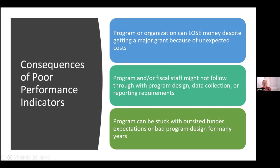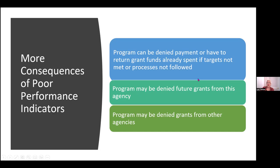More consequences: I've heard of an organization with a five-year grant whose staff stopped collecting data after year two in the way they had promised. At the end of five years, the funder demanded the last three years of the grant back — they talked their way out of it, but it was a very bad moment. Also, if things go badly, that agency may never fund you again, and since foundations and corporations often talk to each other, you may be denied grants from other agencies as well.